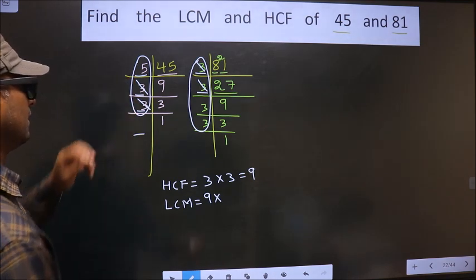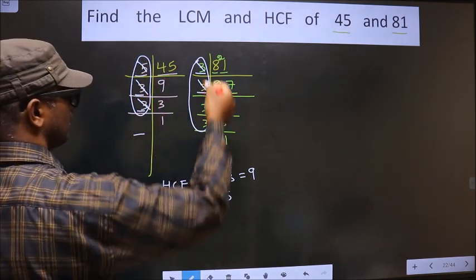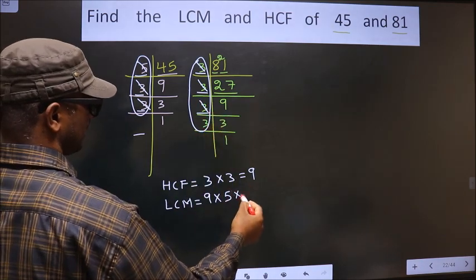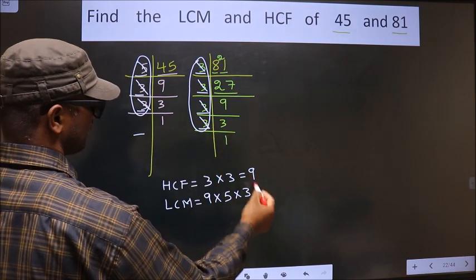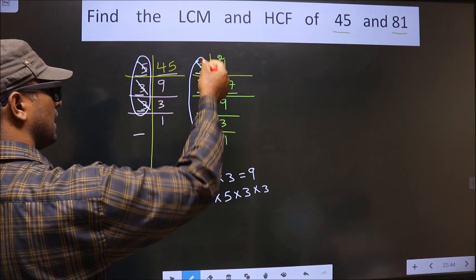Over here, 5 is not cut. So you should cut 5 right here. Now here, 3 is not cut. So you cut 3 right here. Now one more 3 is not cut. So you cut 3 right here. Now each number has been cut.